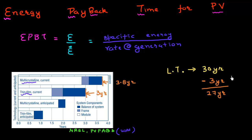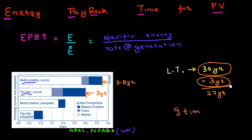Another way to look at this: you require 3 years to recover the energy used to make the solar panels. So compared to the 30-year lifetime, the module is producing nine times the energy — 27 divided by 3 — that was required to make it. And that's using a conservative assumption; it might continue to work even longer.